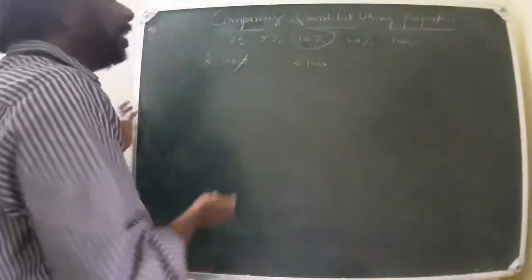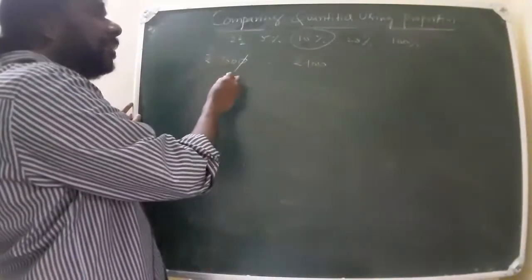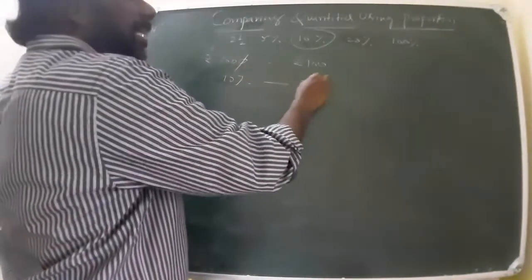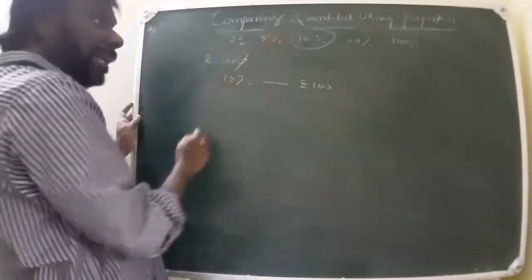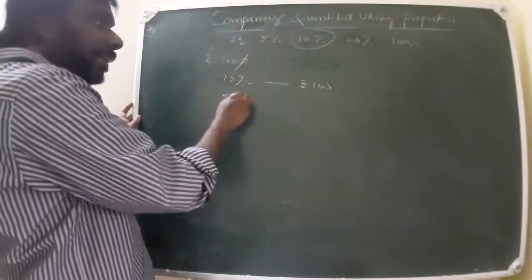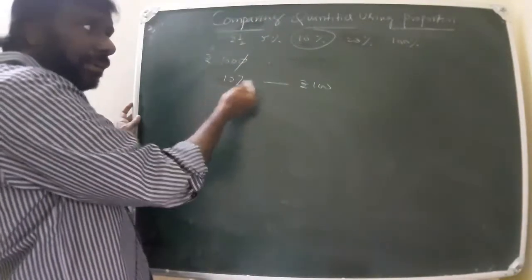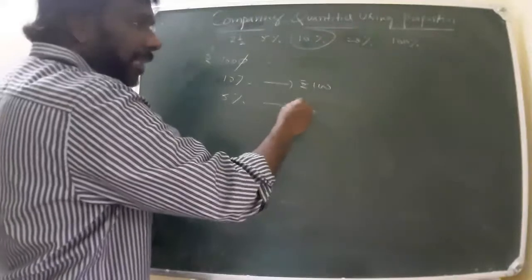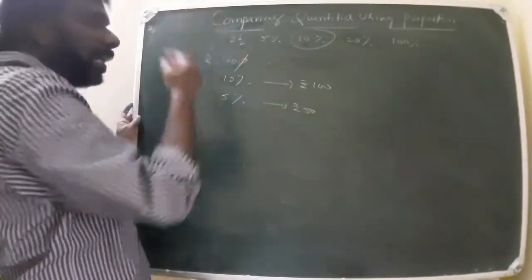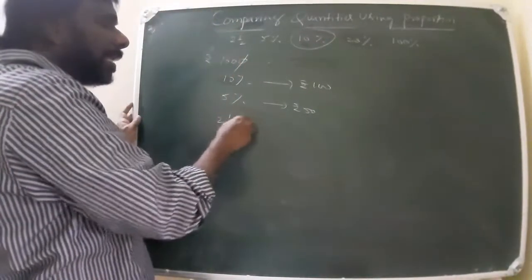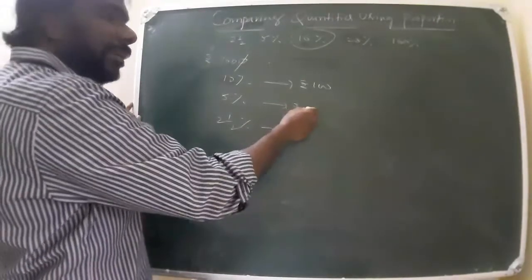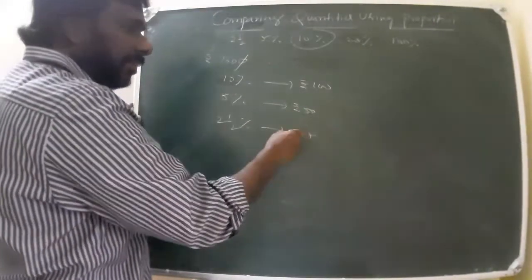If ten percent of one thousand is one hundred, and you want five percent — five is half of ten — so take half of one hundred, which is fifty rupees. For two and a half percent, two and a half is half of five, so take half of fifty, which is twenty-five rupees.